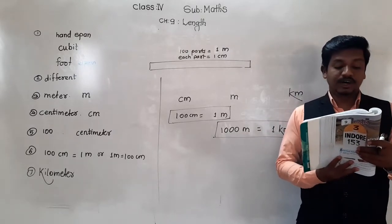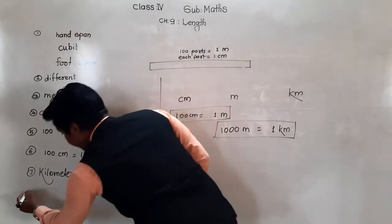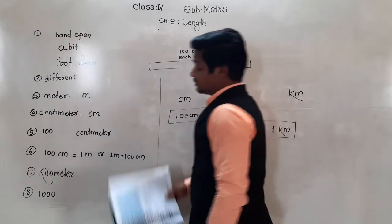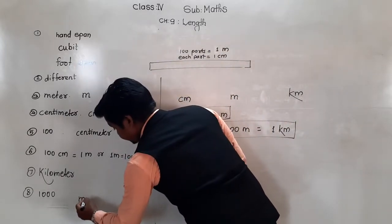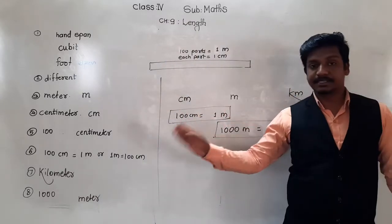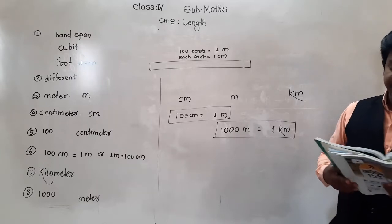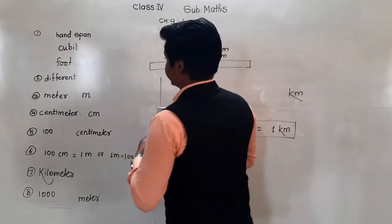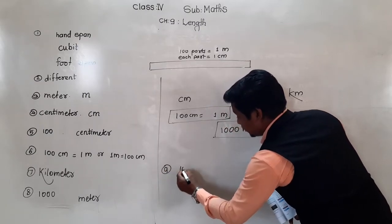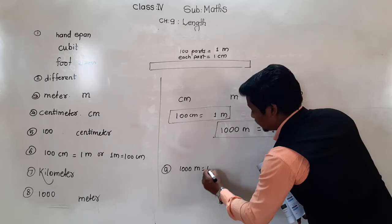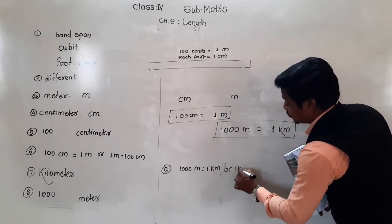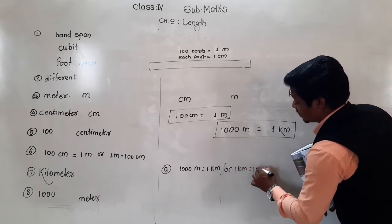If a kilometer is divided into 1000 parts, then each part is a meter. That means 1000 meters equals 1 kilometer, or 1 kilometer is equal to 1000 meters.